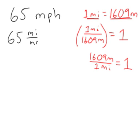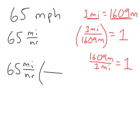So to convert 65 miles per hour into meters per second, we simply multiply by 1. But we multiply by a clever factor of 1, such that the miles cancel out. I am going to choose this one because the miles will then be in the denominator and will cancel